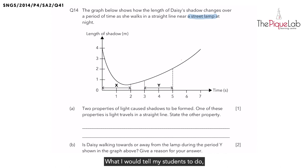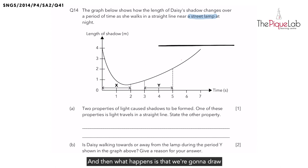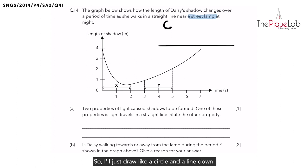What I would tell my students to do is to first take a ruler and a pencil out. Let's draw the ground first so that we have a base to work with, and then we're going to draw a street lamp — just a circle and a line down. And there we have it, a simple street lamp.